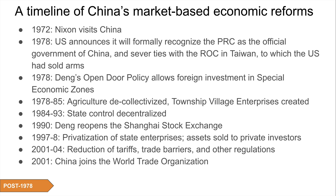In 1990, Deng reopened the Shanghai Stock Exchange — a tremendous symbol of capitalism. In the late 1990s, there was privatization of state enterprises whose assets were sold to private investors, part of a broader privatization movement. From 2001 to 2004, there was a reduction of tariffs, trade barriers, and other regulations as part of China joining the WTO.